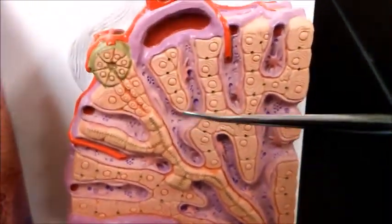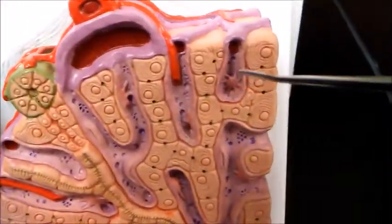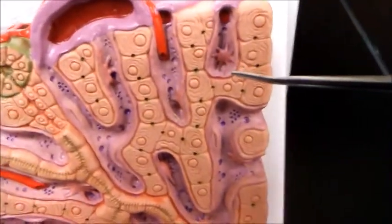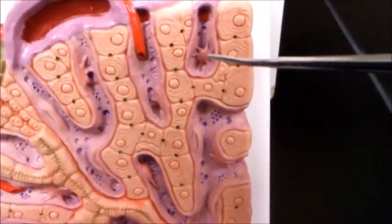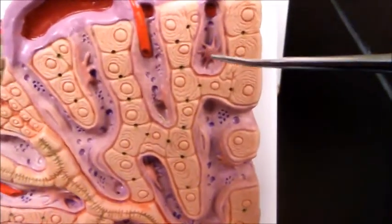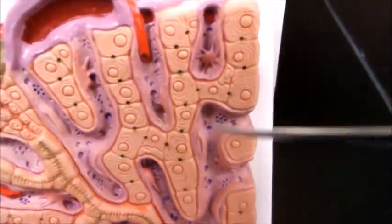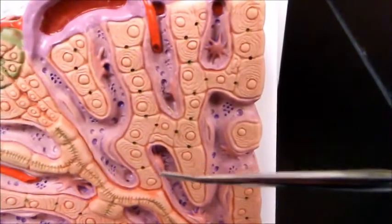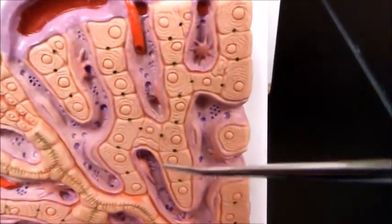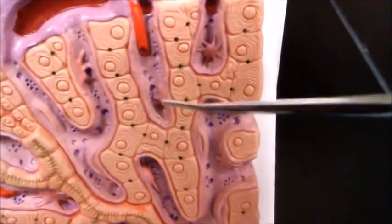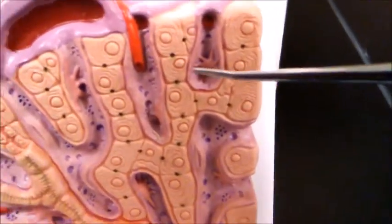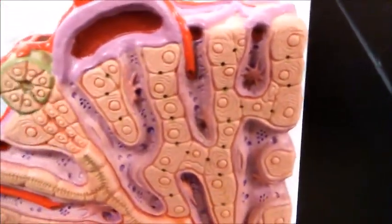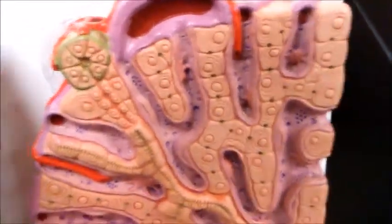We also notice, if we look at the model carefully, that lining these sinusoids are special cells - that's one of them there - known as liver macrophages. There is another one in this area here. These are white blood cells, and they are important in removing pathogens and dead cells.